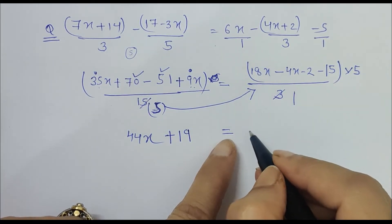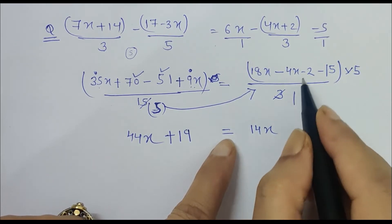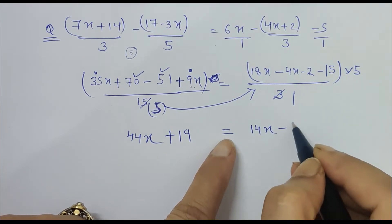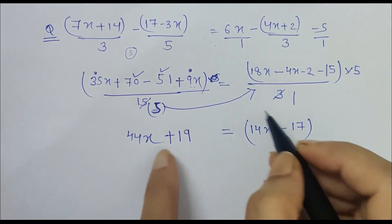10 minus 1 is 9, and 6 minus 5 is 1. This is equal to, what is 18x minus 4x? It is 14x. Then minus 2 minus 15 is how much? Minus 17.